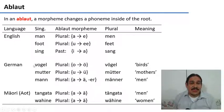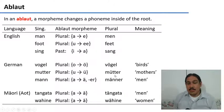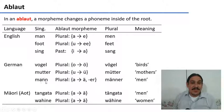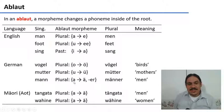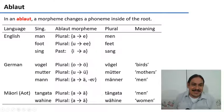German has ablauts too. For example, in the plural, to turn 'Vogel' (bird) into 'Vögel' (birds), you change this vowel into its rounded version. Likewise, from 'Mutter' to 'Mütter', you change the u to its rounded form. For the plural of 'Mann', you do two things: you have an ablaut where you change the vowel, and then you add the suffix -er to it, giving 'Männer'. So you can have an ablaut and a suffix at the same time.